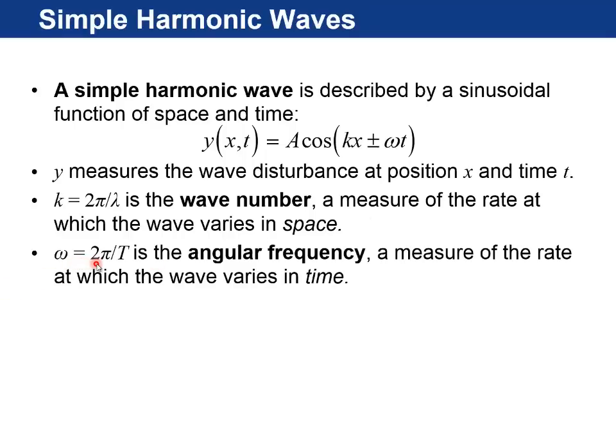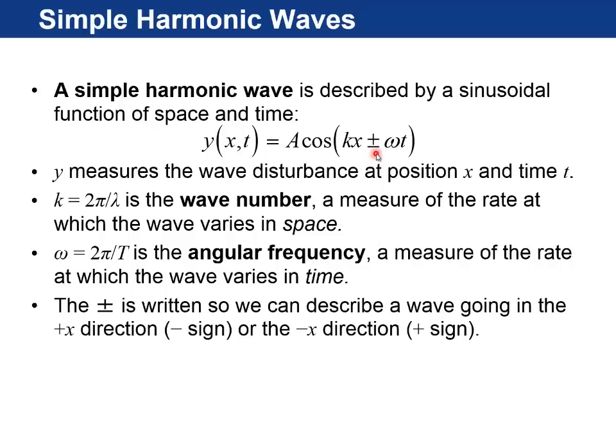Omega, we've seen before, is the angular frequency in radians per second, 2π divided by the period. It's a measure of the rate at which the wave varies in time. And it says plus or minus here. That is written so we can describe a wave that's either going in the plus direction, for which we would actually put a negative sign here, or if the wave is traveling in the negative x direction, for which we would put a plus there. And the wave speed is lambda times f. That can be written with omega and k as omega divided by k. So omega is radians per second. k is radians per meter. This ends up being the wave speed in meters per second.